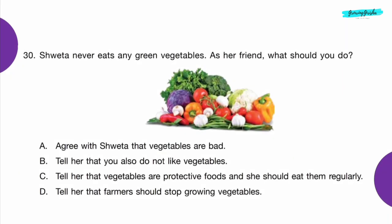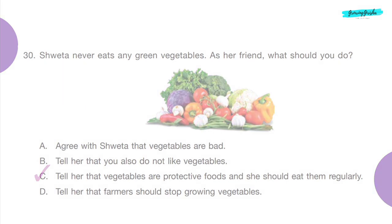Question 30: Shweta never eats any green vegetables. As her friend, what should you do? Option C — Tell her that vegetables are protective foods and she should eat them regularly.